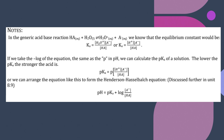In this generic acid-base reaction, we have HA plus H2O producing hydronium ion and then your anion. The Ka equals the hydronium ion concentration times the anion concentration over the acid concentration. If we take the negative log of this equation, we get the pKa. We can also arrange it to look at the Henderson-Hasselbalch equation, which we'll talk about in a couple more units.